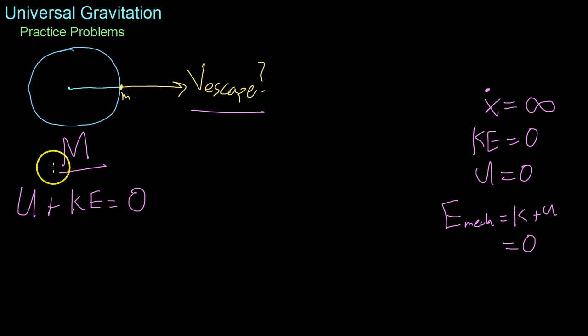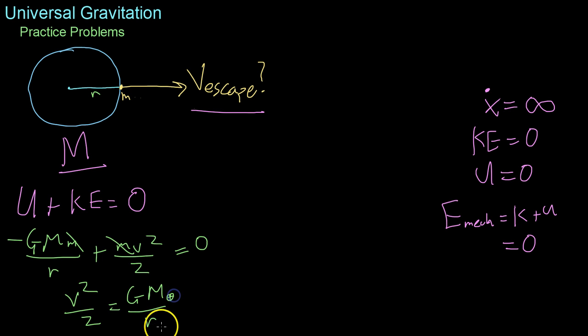And plug in our equations for both of these quantities. In this case, we have negative G, big M, little m over the radius, the radial distance right here, r, plus the kinetic energy, mv squared over two equals zero. We can cancel out the little m, that won't matter. And moving this over, we get that v squared over two equals G times the mass of the Earth over the radius of the Earth, which I'll write with this little symbol, a circle with a cross through it.